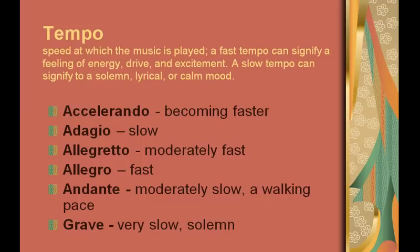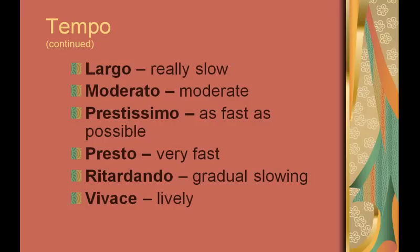Accelerando is becoming faster. Adagio is slow. Allegretto is moderately fast. Allegro is fast. Andante is moderately slow, a walking pace. Grave is very slow or solemn. Largo is really slow. Moderato is moderate. Prestissimo is as fast as possible. Presto is very fast. Ritardando is gradually slowing. And vivace is lively.